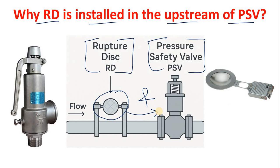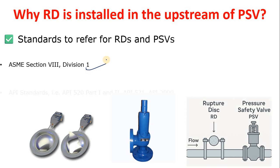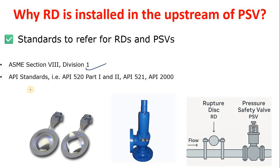Before discussing the reasons, let's look at the standards you may refer to when dealing with or sizing a rupture disk or pressure safety valve. The first standard is ASME Section 8 Division 1. You can also refer to API 520 Part 1, API 520 Part 2, API 521, and API 2000, depending on where your PSV or rupture disk is installed.